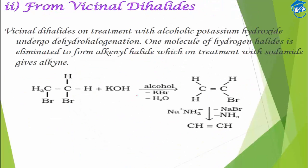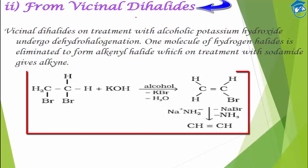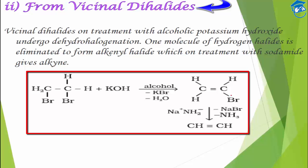Next, how can alkynes be prepared from vicinal dihalide? As seen in the previous video, alcoholic KOH is used in dehydrohalogenation. If vicinal dihalide undergoes dehydrohalogenation, one hydrogen and one bromine will be removed, giving us a vinyl halide.